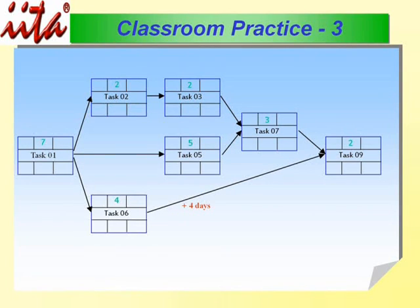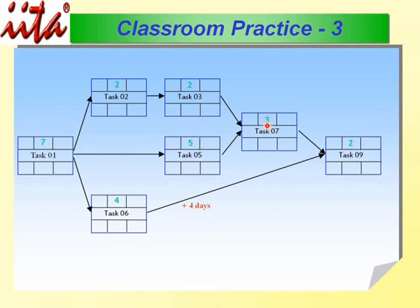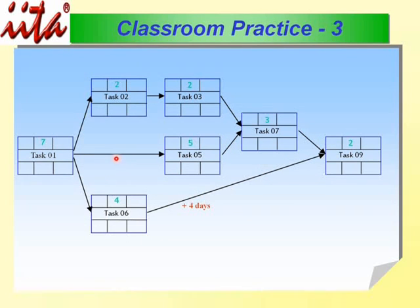The last example: adding one route gives 16, and another route also gives 16. But adding another route: 7 + 5 = 12, plus 3 = 15, plus 2 = 17. And yet another route: 7 + 4 = 11, plus a lag of 4 = 15, plus 2 = 17. Because of this lag or delay, we have two critical paths here as well.